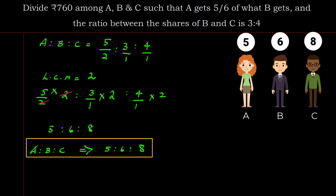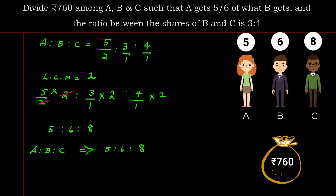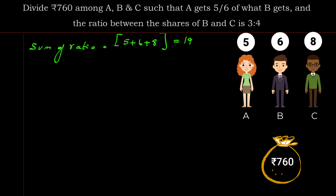Using the sum of ratio method: sum = 5 + 6 + 8 = 19. A's share = 5/19 × 760. Since 760 ÷ 19 = 40, A's share = 5 × 40 = Rs. 200. B's share = 6/19 × 760 = 6 × 40 = Rs. 240.